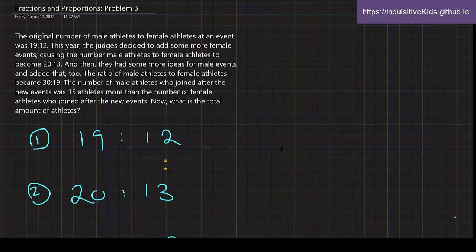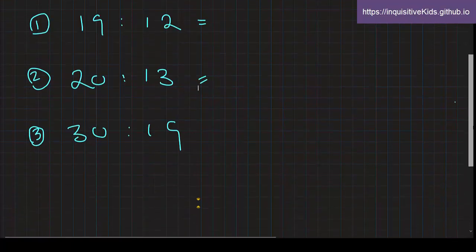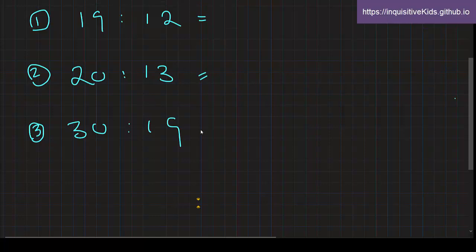They added new events two times. So what is the total amount of athletes? First, if we're going to compare ratios, we need to have a value that doesn't change. So let's try to find the equivalent ratios of these three ratios.